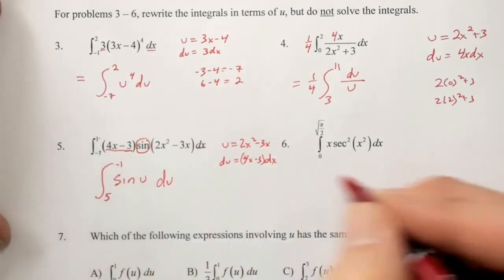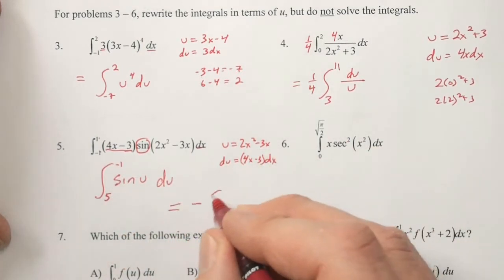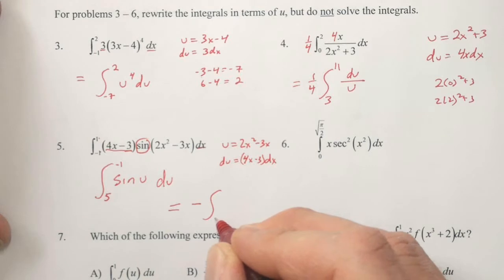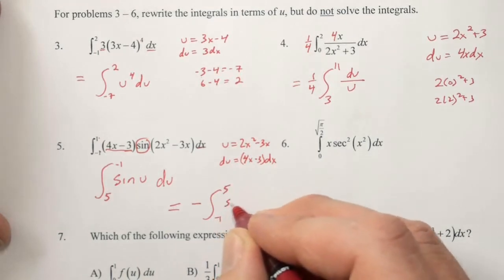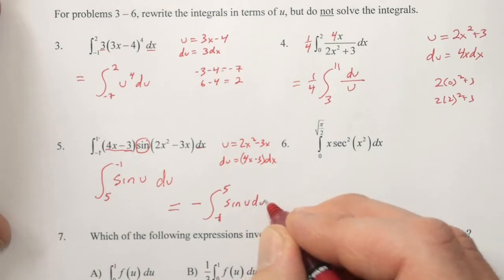These bounds are backwards, so we need to alter this by negating the integrand and swapping the bounds. So we have the opposite of the integral from negative 1 to 5 of sine of u du.